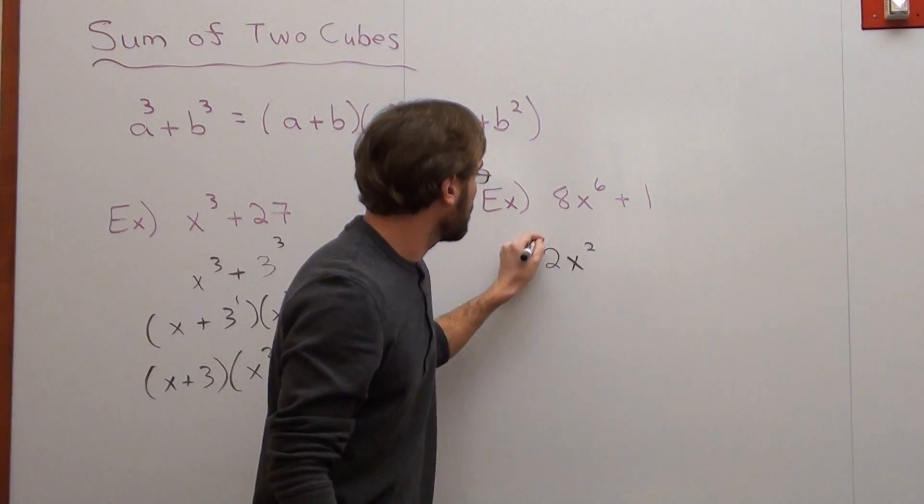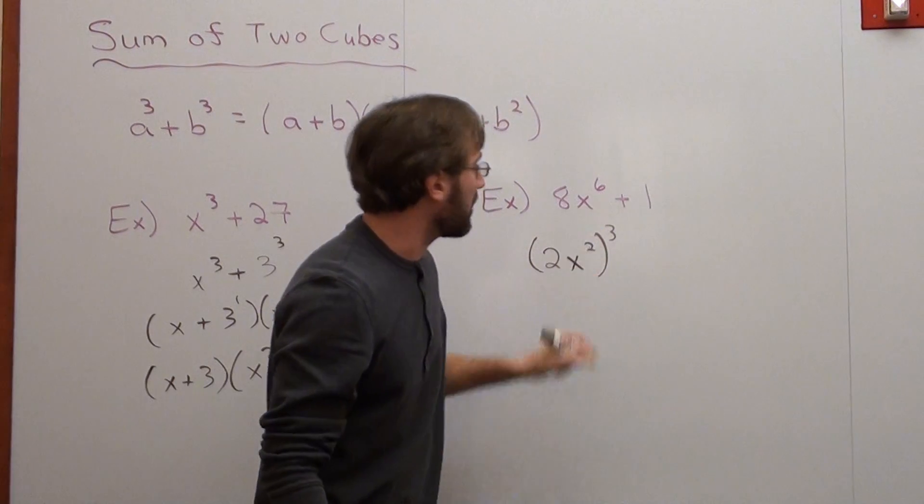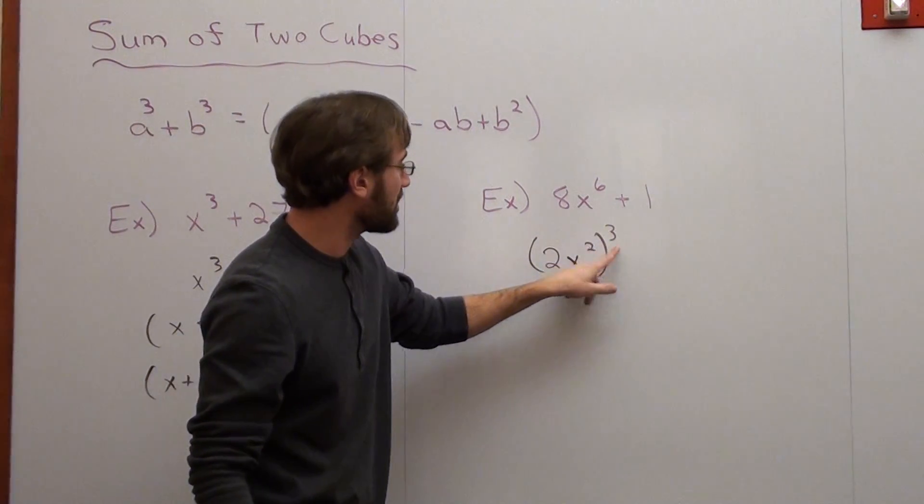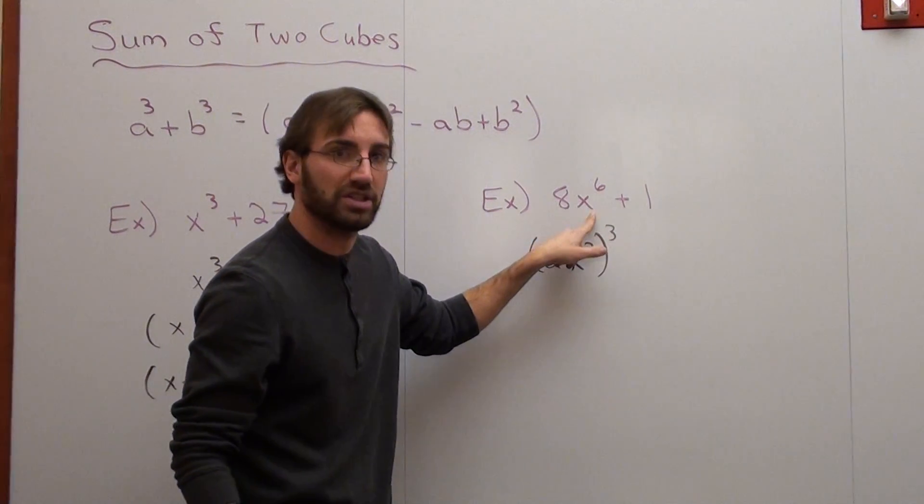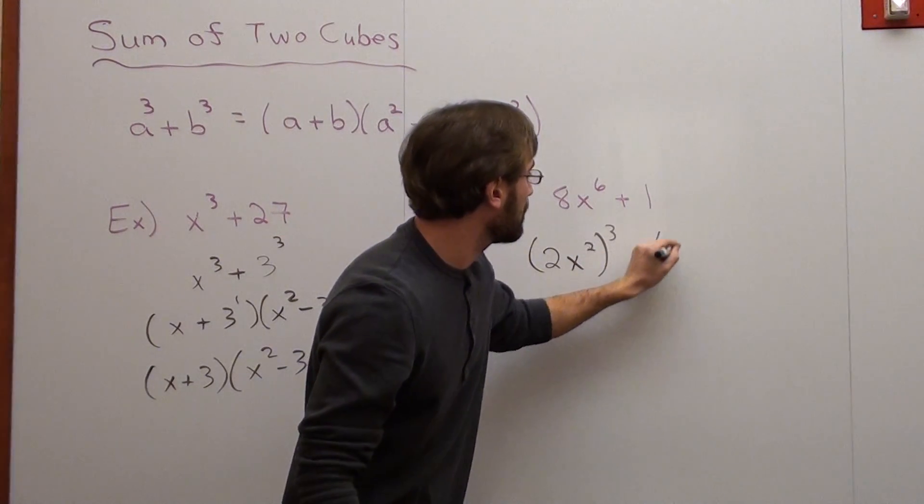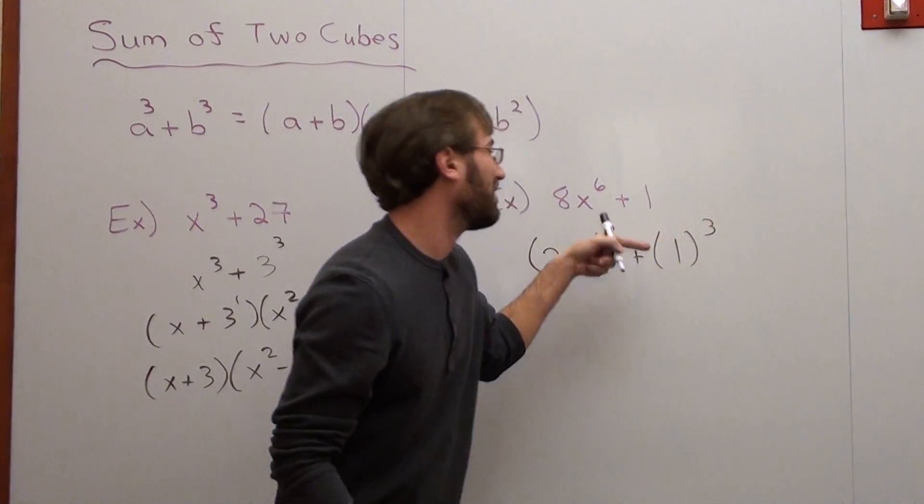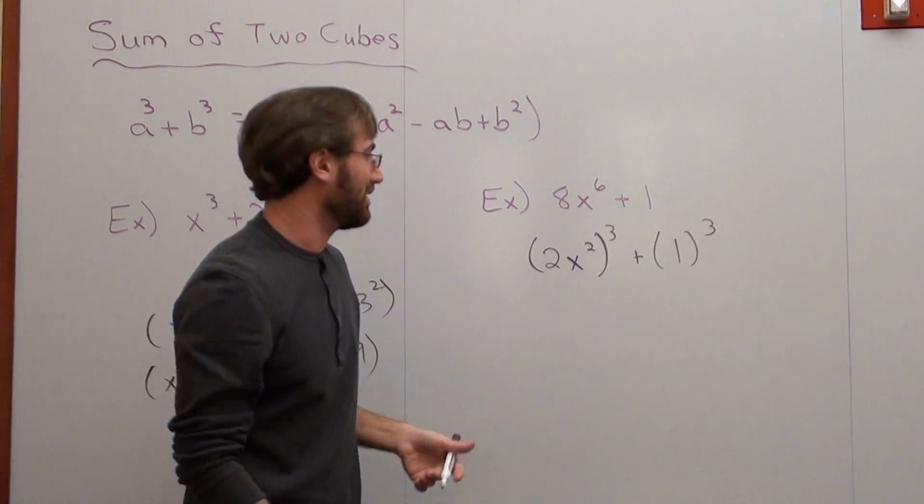And x⁶ is the same thing as x² times x² times x². So actually, it's (2x²)³. 2³ is 8. (x²)³ is x⁶. Plus 1³. 1 × 1 × 1 is 1. That doesn't really change.